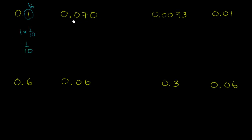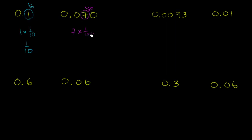Now when we look at this number right over here, it has nothing in the tenths place. It has 7 in the hundredths place — that's the hundredths place right over here — and then nothing in the thousandths place. So this number can be rewritten as 7 times 1 over 100, or 7 hundredths.